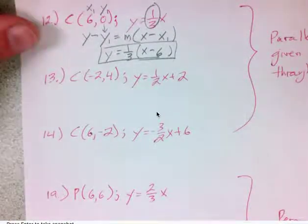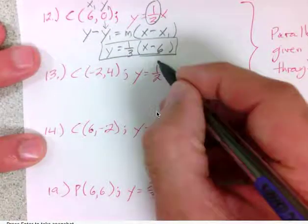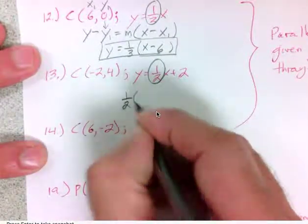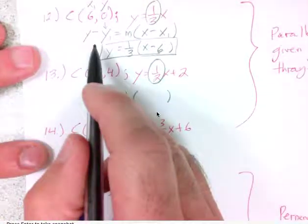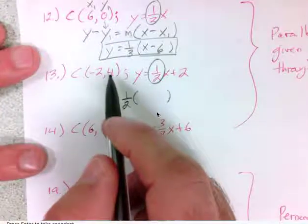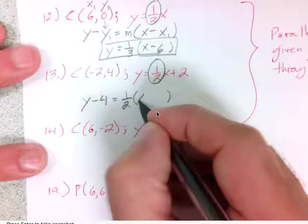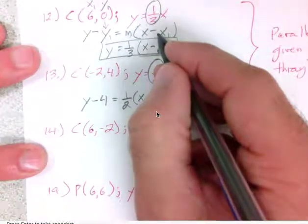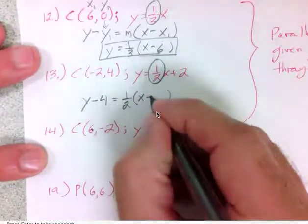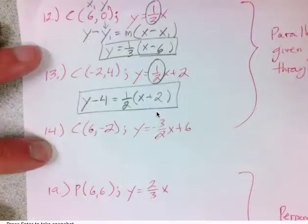For question 13, I want to be parallel to the given line, so I use the slope of one-half. Using point-slope form: y minus four equals one-half times x minus the negative two, which turns into x plus two. So the equation is y minus four equals one-half times the quantity x plus two. That's the equation of my parallel line.